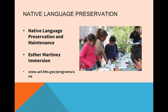ANA's grant program areas are social and economic development strategies, native language preservation, and environmental enhancement. The programs you might be interested in are the native language and preservation grants. We have two program areas under native language, one of which is the native language preservation and maintenance. Those grants are a wide variety of community-driven projects — whatever the community has deemed important in terms of maintaining or preserving their native language. It can include curriculum development, teacher training, classroom education, adult education, and more.